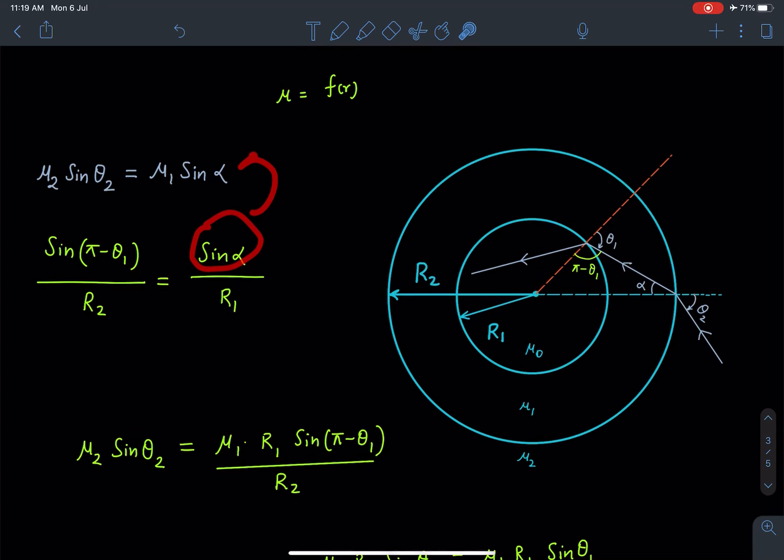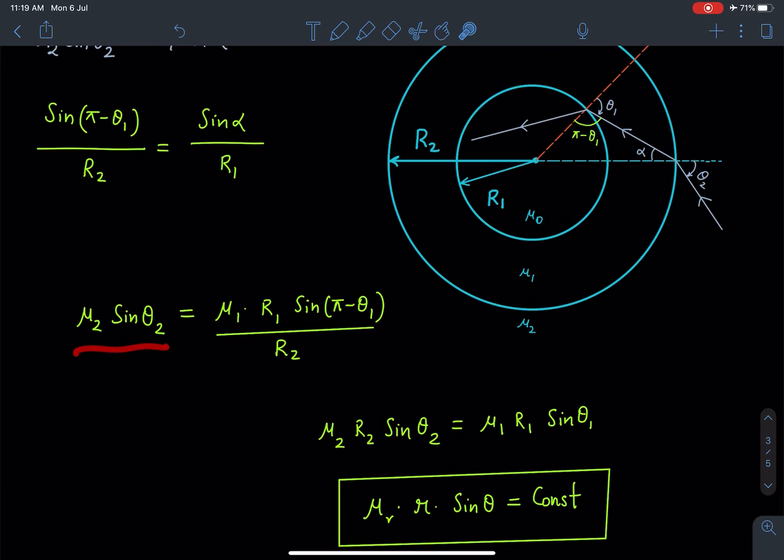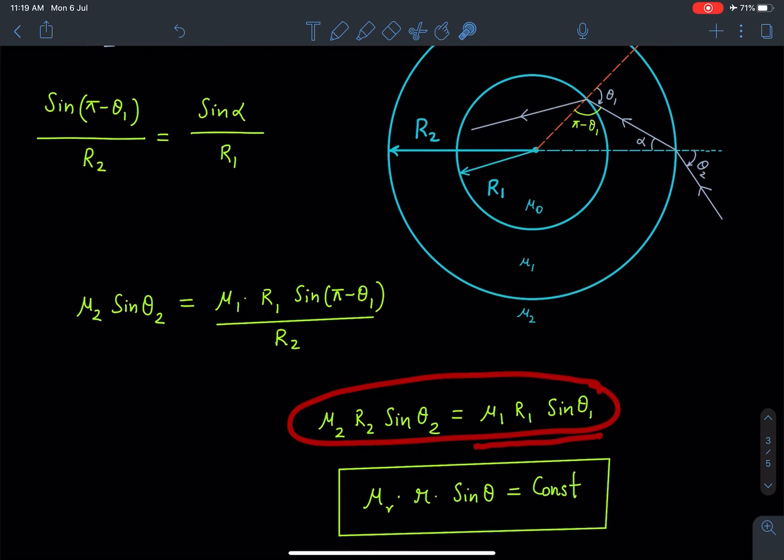When I simplify and substitute the sin α value in this expression, I get μ₂ sin θ₂ equals μ₁ r₁ sin(π - θ₁) by r₂. Since sin(π - θ₁) equals sin θ₁ itself, and if I rearrange this term with r₂ on this side, this becomes μ₂ r₂ sin θ₂ equals μ₁ r₁ sin θ₁.